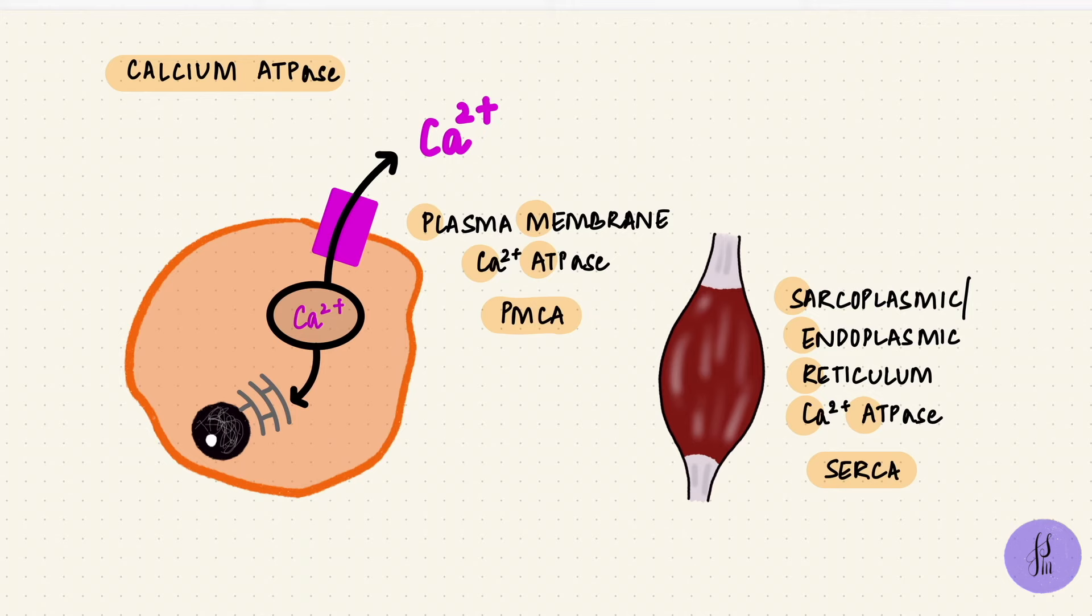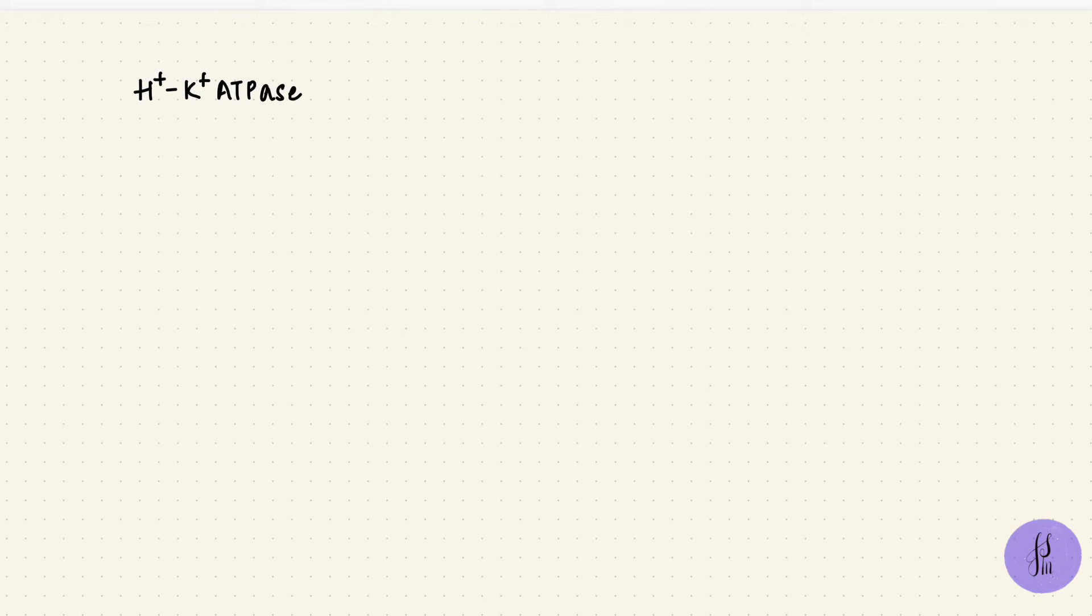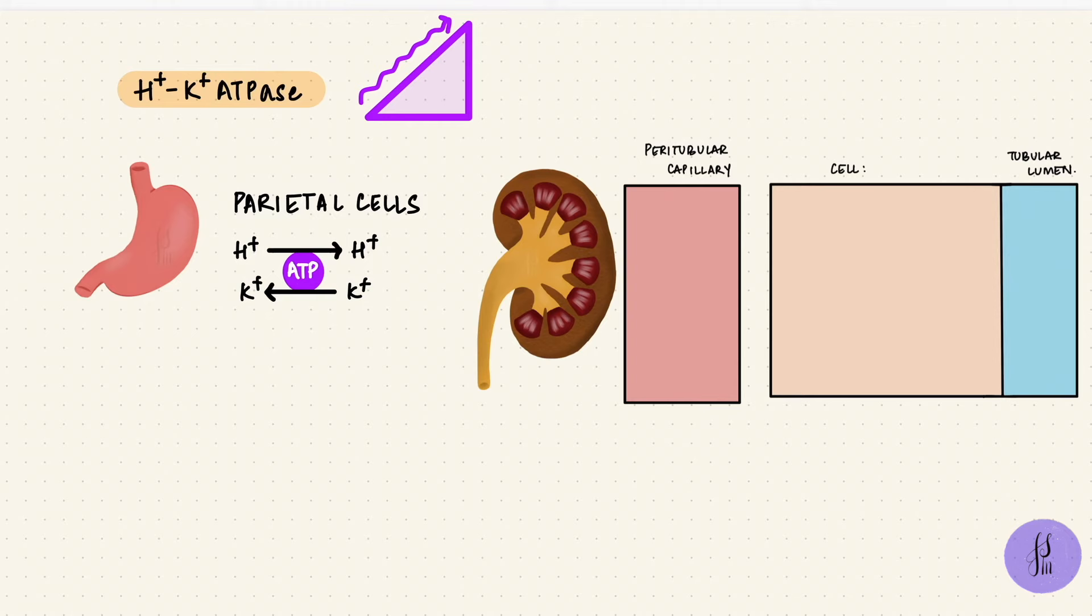The last example is the proton potassium pump, hydrogen ions and potassium ions. It's the same thing, they're going to move against the gradient. There are two important places where these pumps work, and that's the parietal cells of the stomach, which makes sense because those hydrogen ions are needed for gastric acid production. The second place is the renal tubules, the late DCT and the cortical collecting duct. That's important for the kidneys to regulate acid-base balance.